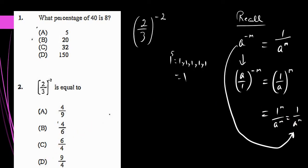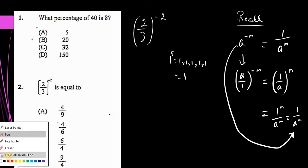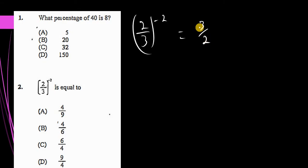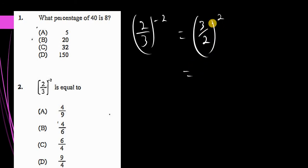Going back to our problem, we have 2/3 raised to the negative 2 power. What we do is flip the 2/3 and put 3/2, and instead of having a negative power, we put a positive power. We can then distribute the power onto each quantity in the numerator and denominator, giving us 3 to the 2nd power over 2 to the 2nd power.